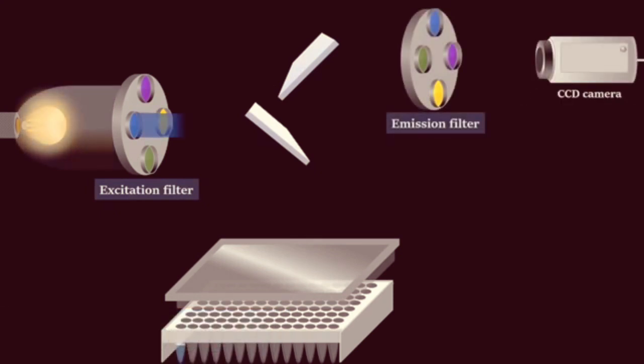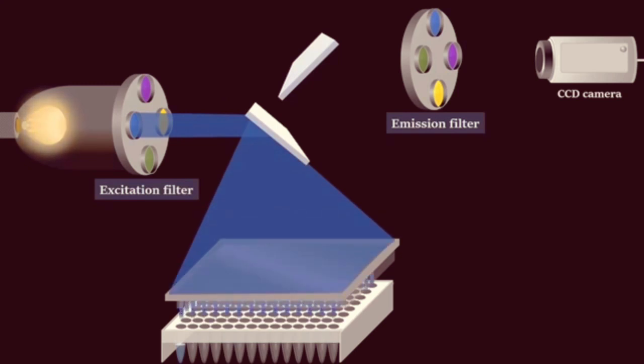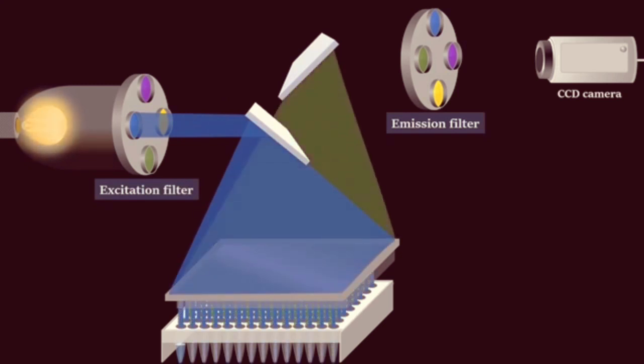Filtered light from the lamp is reflected off mirror, passes through a condensing lens, and is focused into the center of each well. Then fluorescent light emitted from the wells reflects off the mirror, passes through an emission filter, and is detected by the CCD camera.